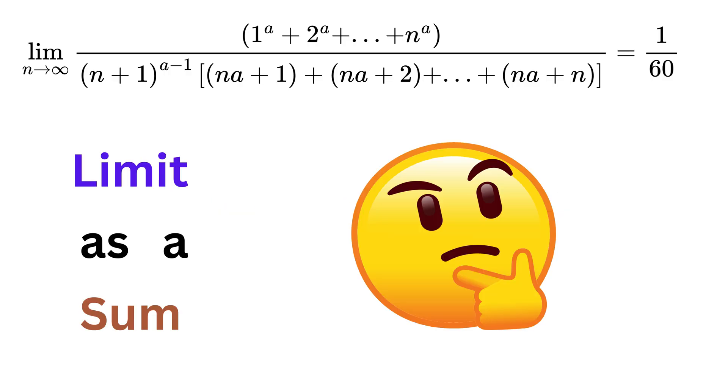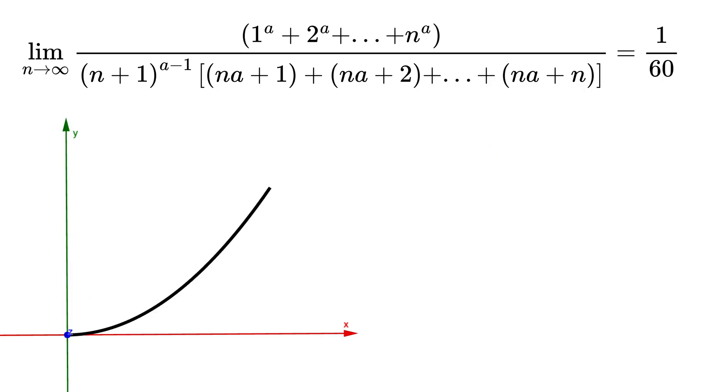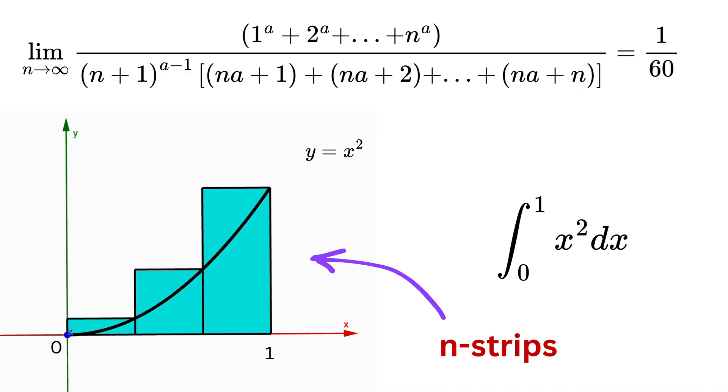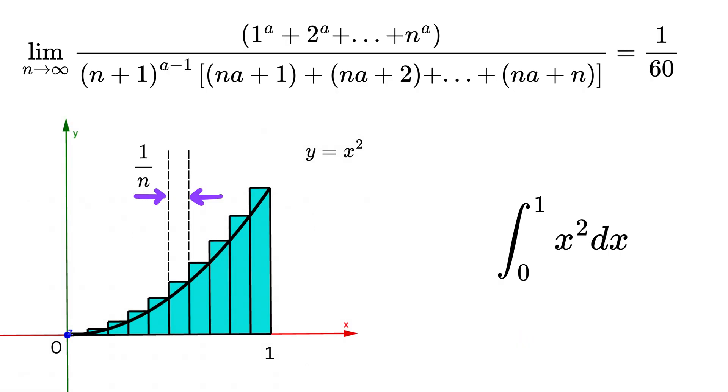To see what a limit as a sum means, imagine the simple curve x squared on the interval from 0 to 1 and assume you want the area under it. We all know that we can do the same using a definite integral from 0 to 1 of x squared times dx. But now cut the interval into n equal thin strips like this, so each strip has width 1 divided by n.